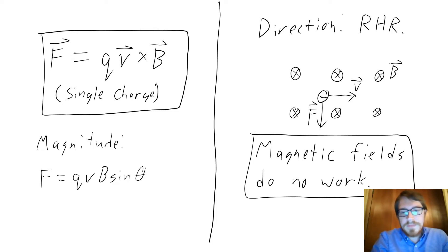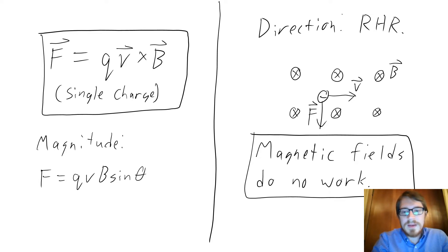If your electric charge is not moving — if you have a stationary electric charge — it will feel no force. In that case, V, the velocity, is zero, so the force on a stationary electric charge due to magnetic fields is zero.